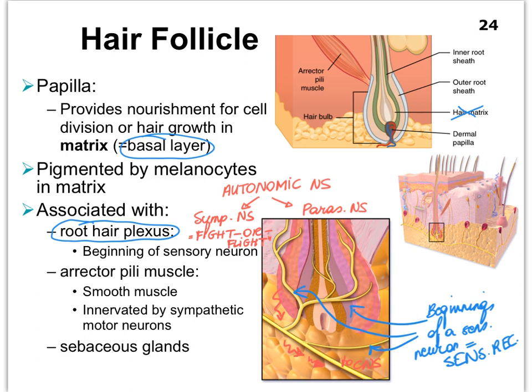Your neck hair might stand up when you see something really gruesome, or experience the proximity of a bear. It is your sympathetic nervous system, which has other neurons — motor neurons — that innervate that arrector pili muscle to contract.